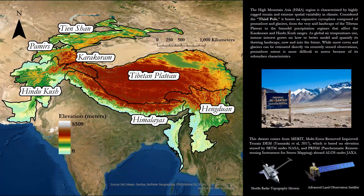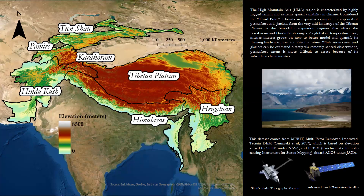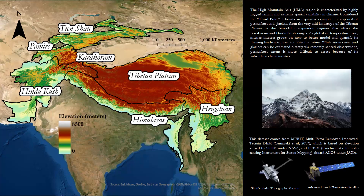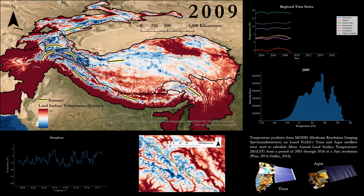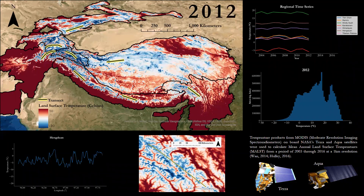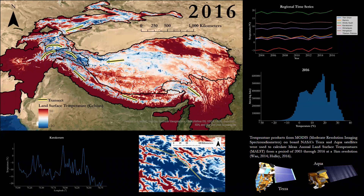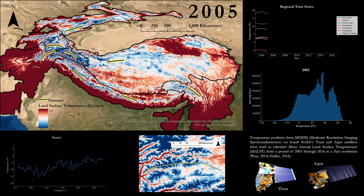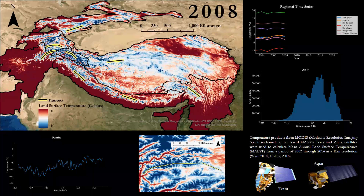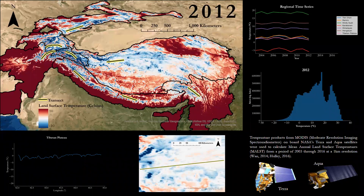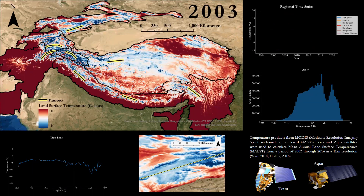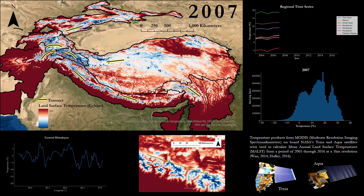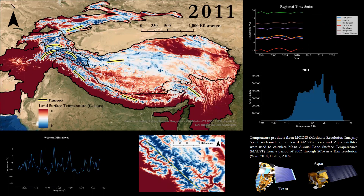While glaciers can be observed through optical means, permafrost extent is more difficult to estimate as it is a subsurface feature. I attempted to map areas of permafrost using land surface temperatures remotely sensed by Terra and Aqua MODIS, or Moderate Resolution Imaging Spectroradiometers. These instruments can detect brightness temperatures in the thermal infrared bands and have become important tools for monitoring land-atmosphere interactions. The goal was to use mean annual land surface temperature from 2003 to 2016 to estimate where permafrost is most likely to exist. The graphs in the far right panels show the spatial averages of the subdivided regions as a time series.